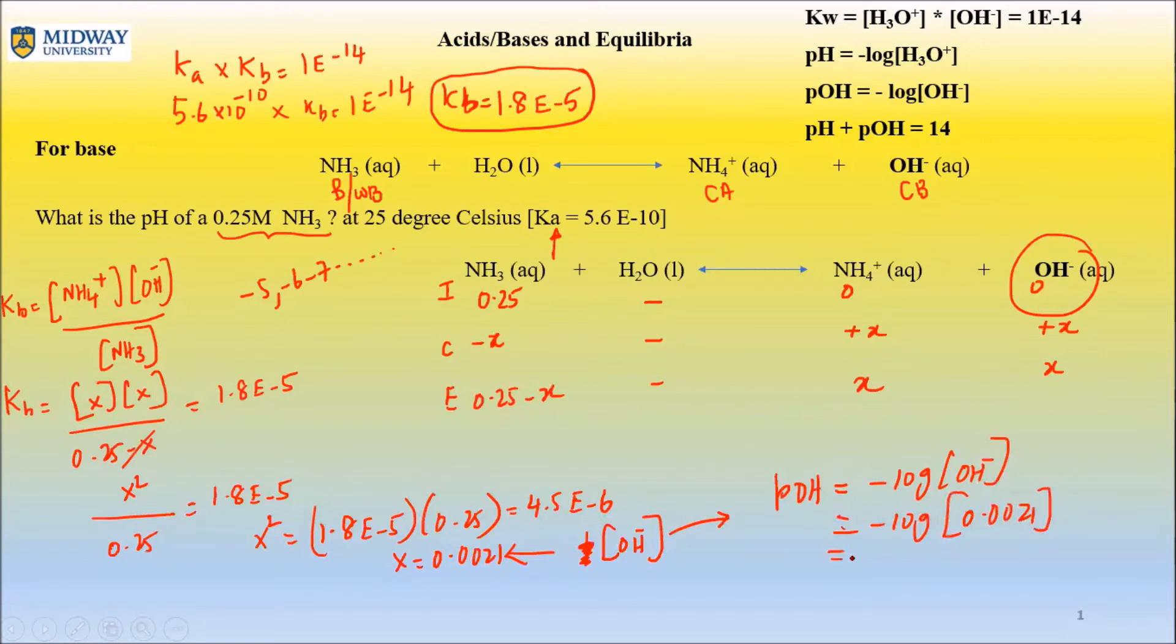Which would be 2.67. That's pOH. And pH would be, that's ultimately what the question is asking. It's not asking for pOH but that's what you can find first. So 14 minus 2.67 is 11.33.